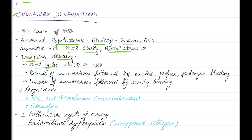Ovulatory dysfunction can cause irregular bleeding. There can be short cycles with normal or heavy menstrual bleeding, periods of amenorrhea followed by painless profuse and prolonged bleeding — this amenorrhea is called anovulatory amenorrhea — and periods of amenorrhea followed by scanty bleeding.